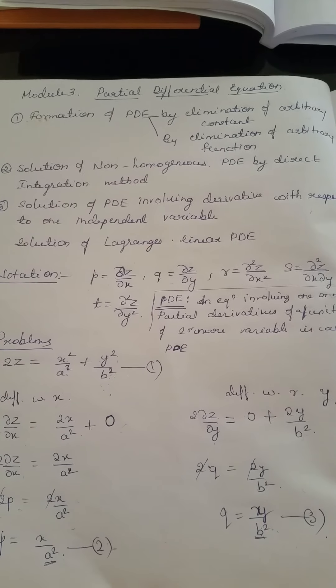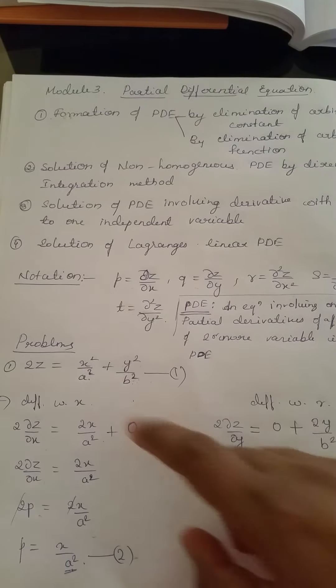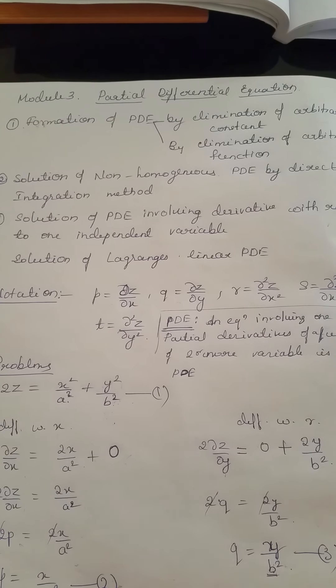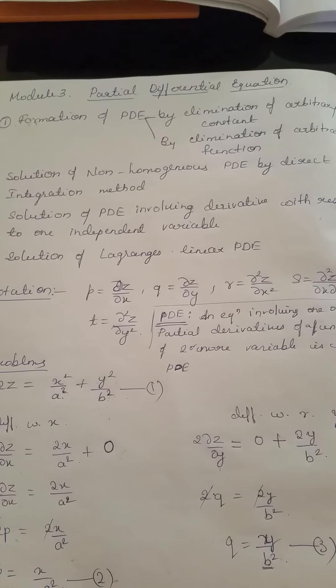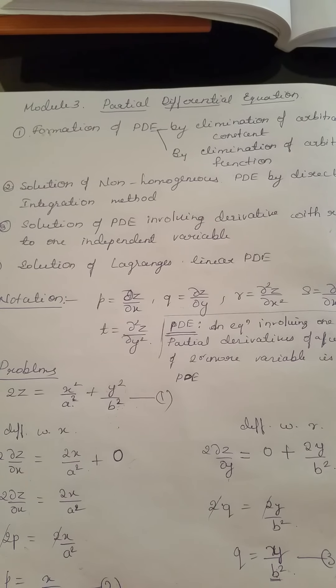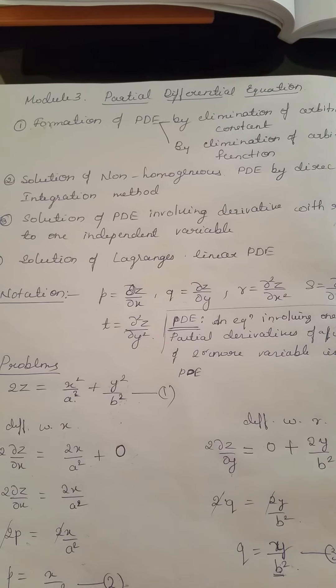Let us solve some problems. Consider 2z = x²/a² + y²/b². Note: if the number of arbitrary constants to be eliminated is equal to the number of independent variables in the given relation, then we obtain a first-order partial differential equation.